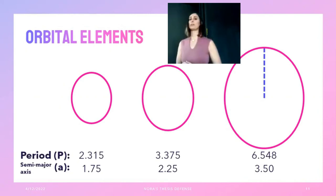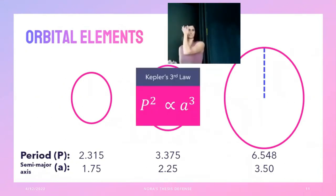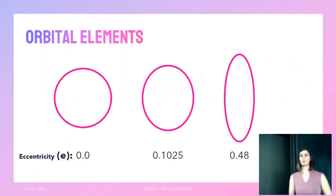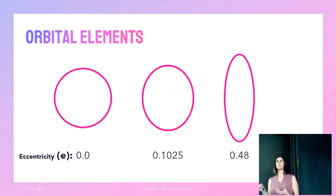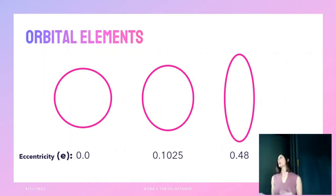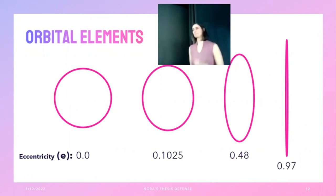Earth's orbital period is one year and its semi-major axis is one AU. From Kepler's third law we can convert between these quantities, so they're not independent — they're telling us the same thing. For how circular the orbit is, we use eccentricity: an eccentricity of zero is a circular orbit, and as you approach one you get more and more elliptical. If you actually reach one you're in an unbound orbit, which is beyond what we'll discuss today.